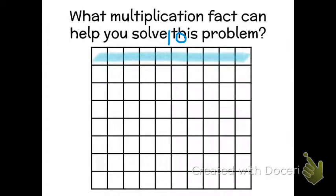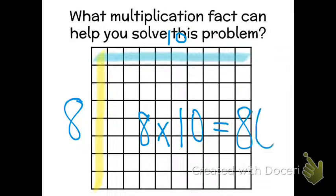And I am noticing that down this side I have 1, 2, 3, 4, 5, 6, 7, 8. So I can write that down. Well I know with arrays I do my multiplication. 8 times 10 would equal 80.